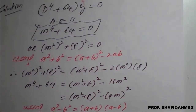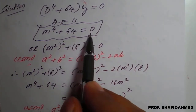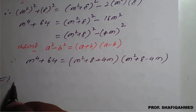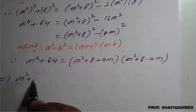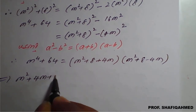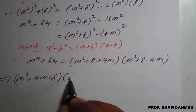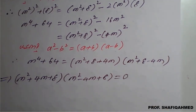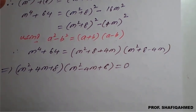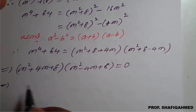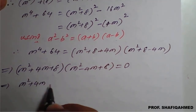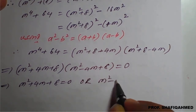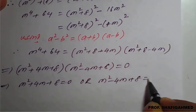But m raised to 4 plus 64 is already equated to 0, so this left hand side equal to 0 means we can get the roots. Which implies m square plus 4m plus 8 in one bracket, and another bracket m square minus 4m plus 8 equal to 0.